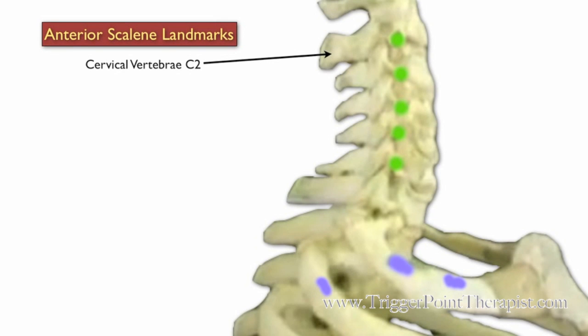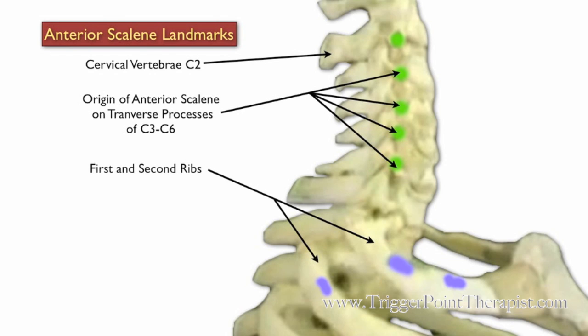Here are the landmarks for the anterior scalene. First we have the cervical vertebrae at C2 and the first and second ribs. The anterior scalene originates on the transverse processes of C3 through C6, and inserts on the first rib.